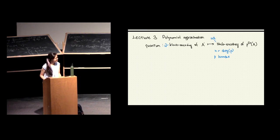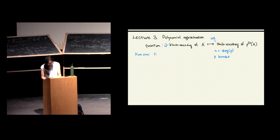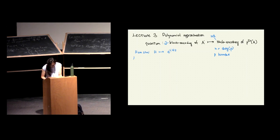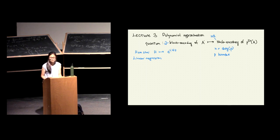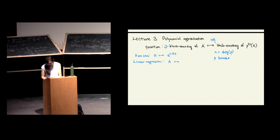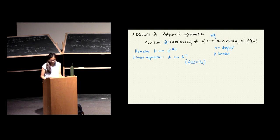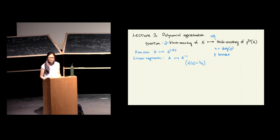The issue is that normally, for a lot of the applications we want, we're actually wanting to apply non-polynomial functions. So in the Hamiltonian simulation example, we wanted to apply the function from H to e to the minus iHt. This is not a polynomial. Similarly, there's the linear regression algorithm central to quantum machine learning, which performs the map A to A inverse when A is a sparse matrix — essentially applying the function one over x. These are not polynomials, so you're going to have to work a little harder to find polynomials that approximate them.